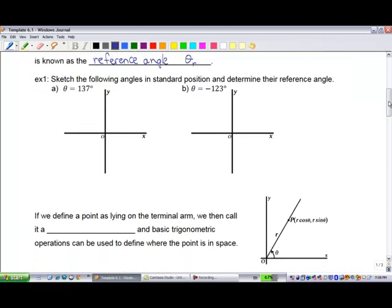Sketch the following angles in standard position and determine their reference angle. The first one is rotation by 137 degrees in the positive direction. If we're rotating in the positive direction, that's counterclockwise. Straight up is 90 degrees, straight left is 180 degrees, 270 is straight down, and 360 we come back to the start. 137 degrees is bigger than 90 but not bigger than 180, so we draw our terminal arm in that quadrant.